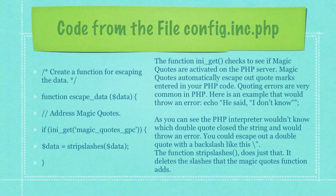The function ini_get checks to see if magic quotes are activated on the PHP server. Magic quotes automatically escape out quote marks entered in your PHP code. As you can see, the PHP interpreter wouldn't know which double quote closed the string and would throw an error. You could escape out a double quote with a backslash like this. The function strip_slashes does just that — it deletes the slashes that the magic quotes function adds.